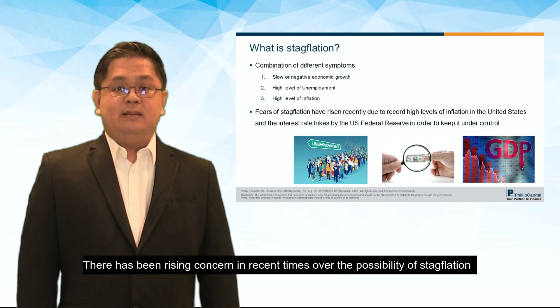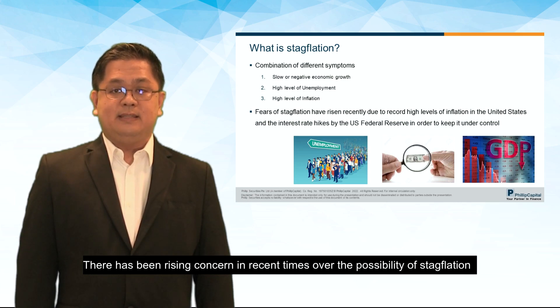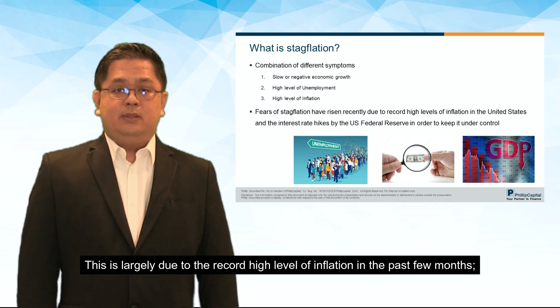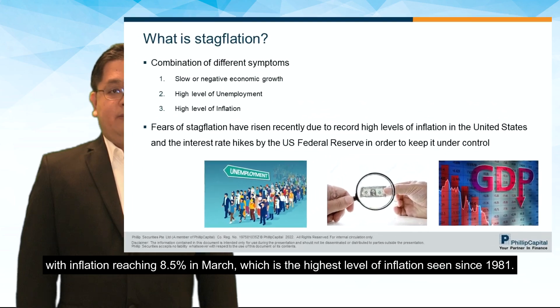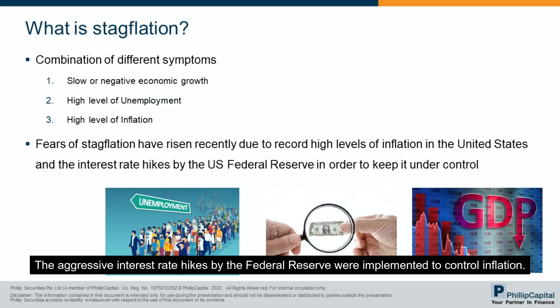There has been rising concern in recent times over the possibility of stagflation making a return to the United States. This is largely due to the record high level of inflation in the past few months, with inflation reaching 8.5% in March, which is the highest level of inflation seen since 1981. The aggressive interest rate hikes by the Federal Reserve were implemented to control inflation.